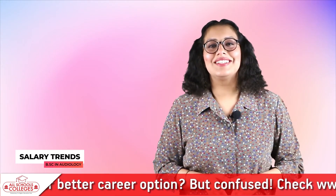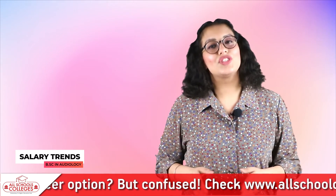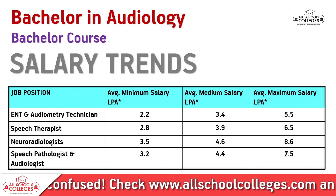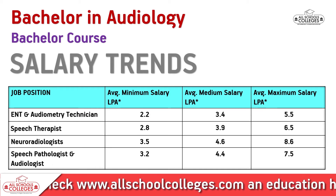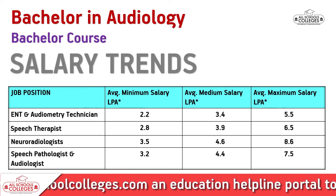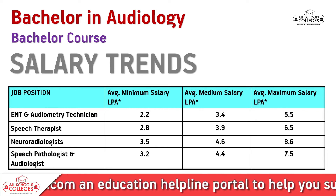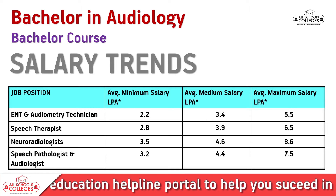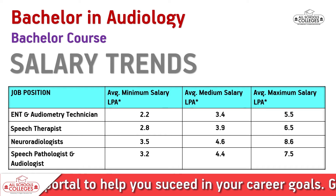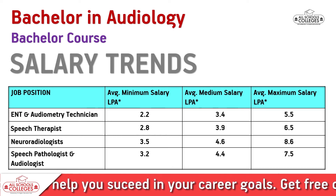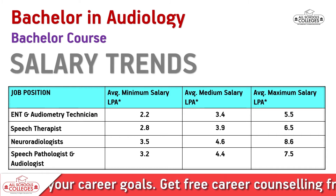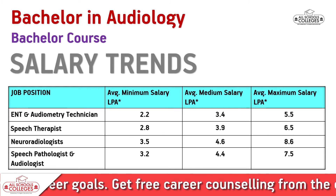Looking at specific salary ranges by job profile: an ENT and audiometry technician earns 2.2 to 5.5 lakhs per annum; a speech therapist earns 2.8 to 6.5 lakhs per annum; a neuroradiologist earns 3.5 to 8.6 lakhs per annum; and a speech pathologist and audiologist earns 3.2 to 7.5 lakhs per annum.